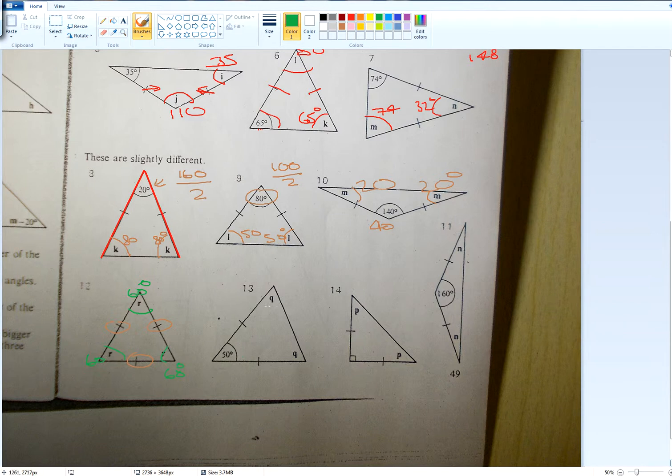Now this is 50. These are both Q's. 180 take away 50 is 130. 130 divided by 2 will give you 65.